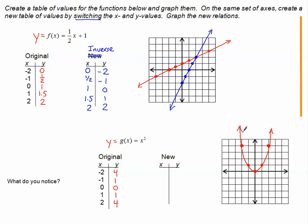To graph the inverse of g(x), we take the five ordered pairs and swap the columns: the x values (−2, −1, 0, 1, 2) become the new y values, and the y values (4, 1, 0, 1, 4) become the new x values. Now let's graph these new five ordered pairs in a different color: (4, −2), (1, −1), (0, 0), (1, 1), (4, 2). Connecting them gives the blue inverse graph.